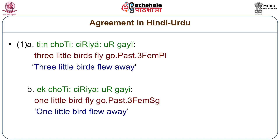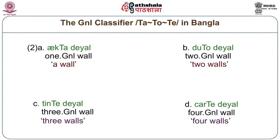In contrast, when you look at a Bangla example, you will find that akta deyal (one wall), duto deyal (two walls), tinte deyal (three walls), chati deyal (four walls) — when embedded in a sentence with a verb — trigger exactly the same kind of verb agreement. It doesn't matter whether it is one wall or four walls. Look more closely at the forms: the ta classifier attached to the numerals changes its shape — akta, duto, tinte, chatte.